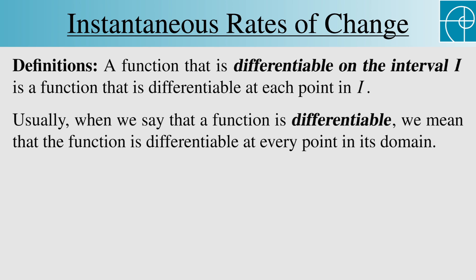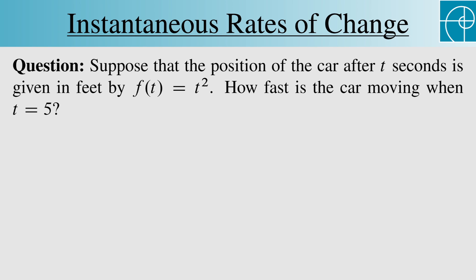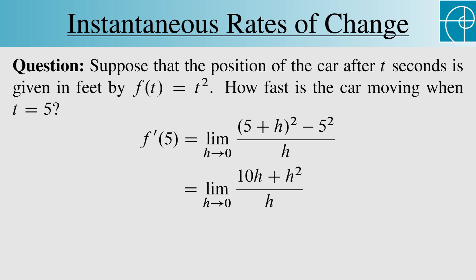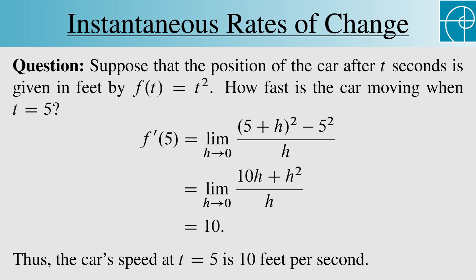Let's look at an example. Suppose that the position of the car after t seconds is given in feet by f(t) = t squared, and we want to know how fast the car is moving when t equals 5. Then we're looking for f'(5), which by definition is this limit. We can simplify the numerator to 10h plus h squared, and this limit equals 10. So the car's speed at t equals 5 is 10 feet per second.